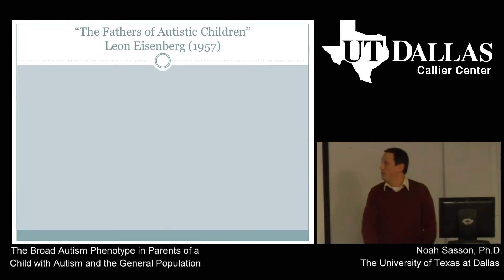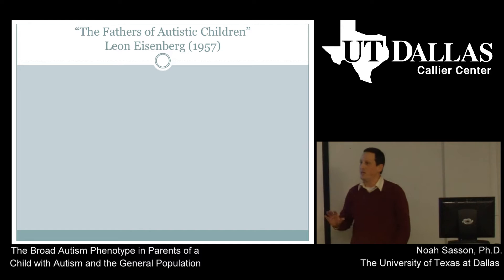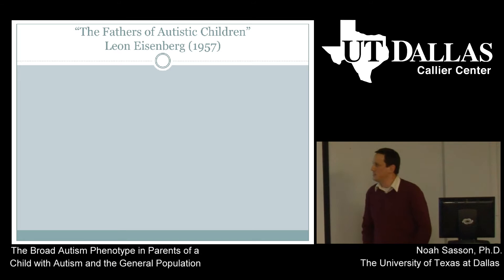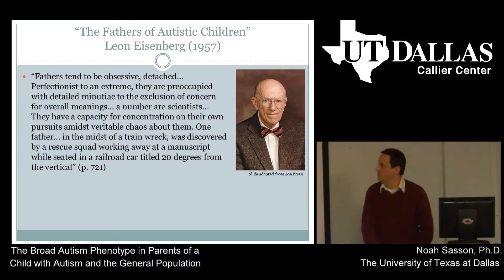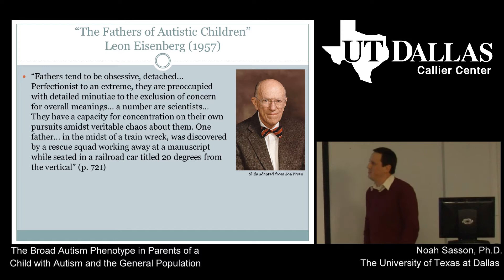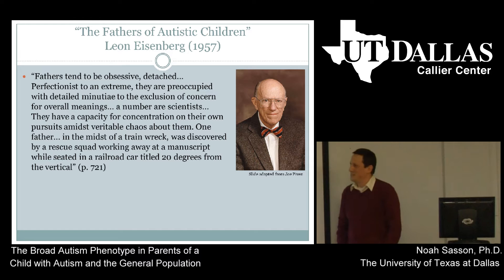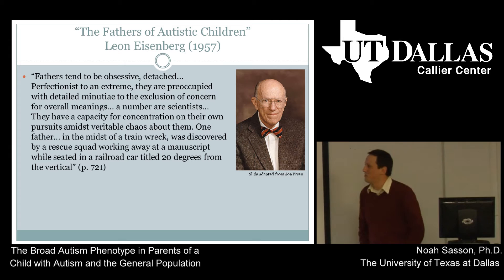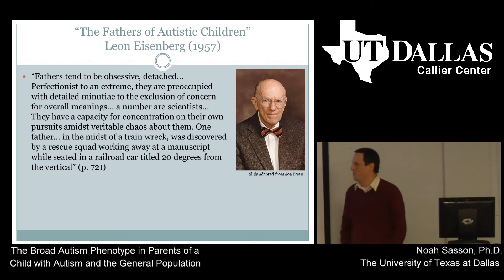Research since Kanner has shown continued interest in personality characteristics similar to autism in family members. There's a famous paper by psychiatrist Leanne Eisenberg, who worked with Kanner, entitled 'The Fathers of Autistic Children.' This passage is quite amusing: 'Fathers tend to be obsessive, detached, perfectionistic to an extreme. They are preoccupied with detailed minutiae to the exclusion of concern for overall meanings. A number are scientists. They have a capacity for concentration on their own pursuits amidst veritable chaos about them. One father, in the midst of a train wreck, was discovered by a rescue squad working away at a manuscript, while riding in a railroad car tilting 20 degrees.'